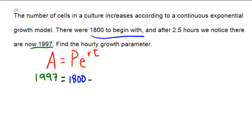E is just a number, the r is the interest rate or the growth rate which we're looking for, and the t is the time, which is given right here as 2.5 hours. So I'm going to put that in there as a 2.5.